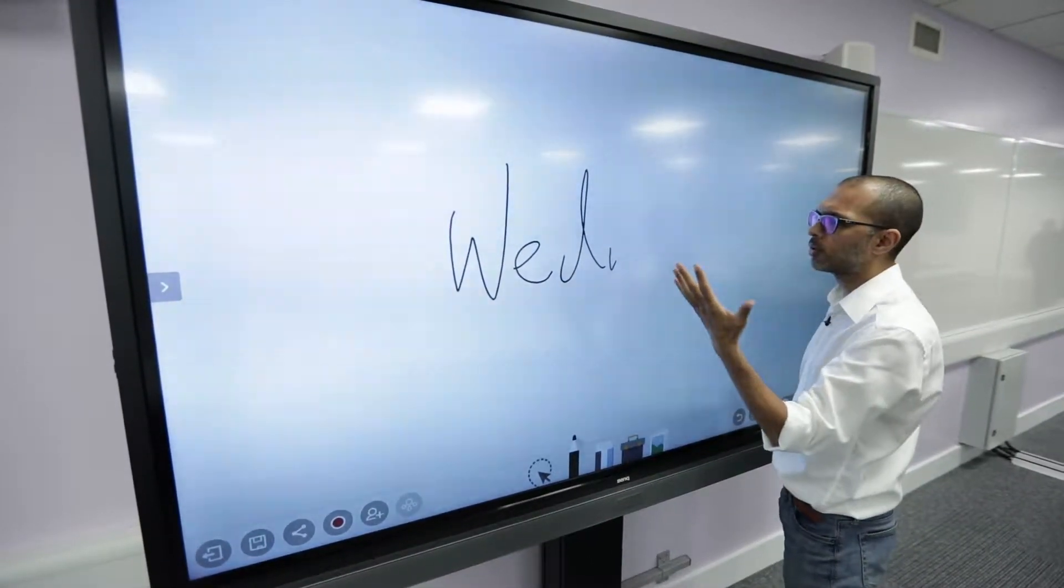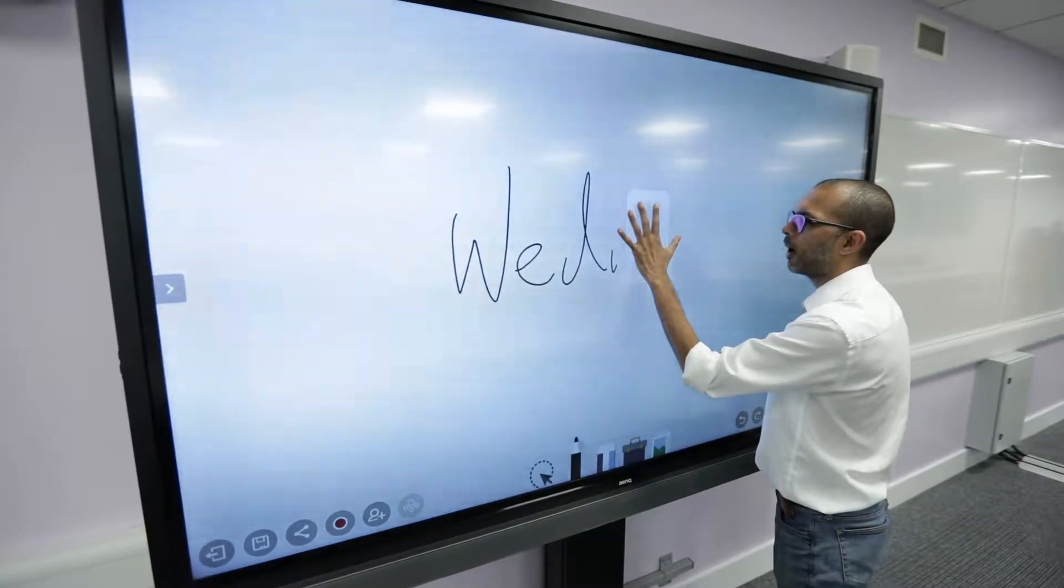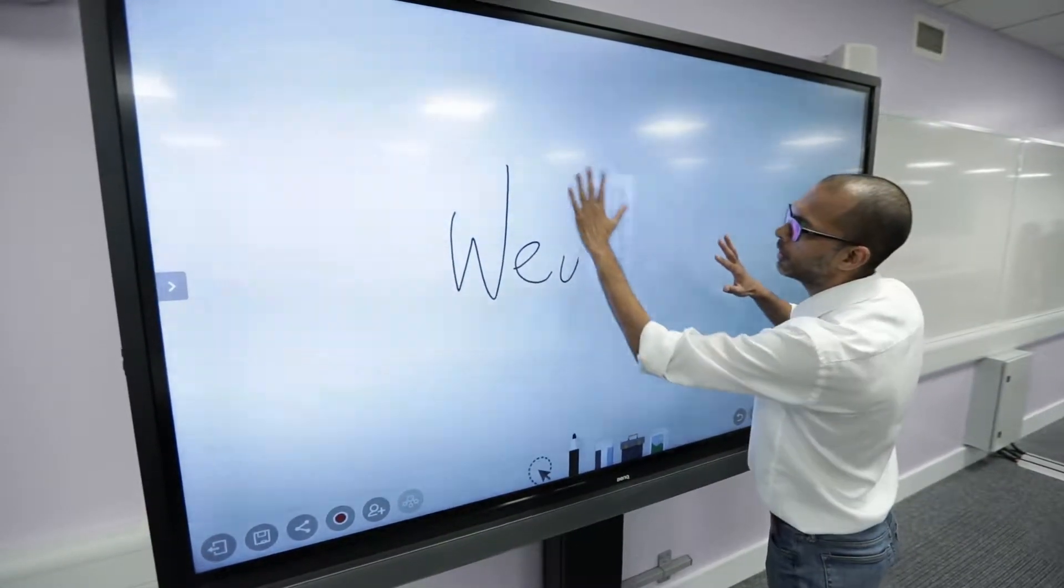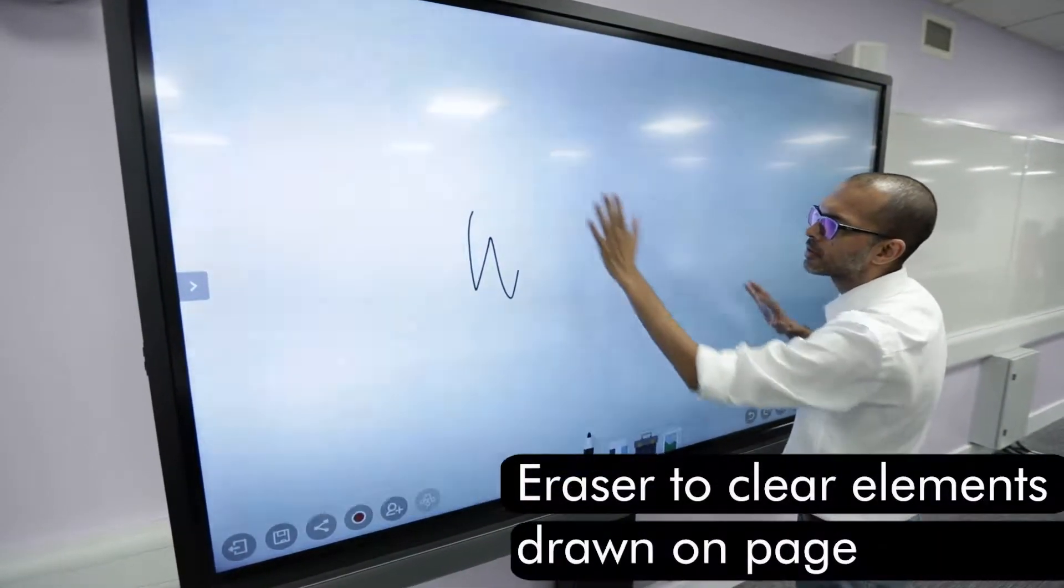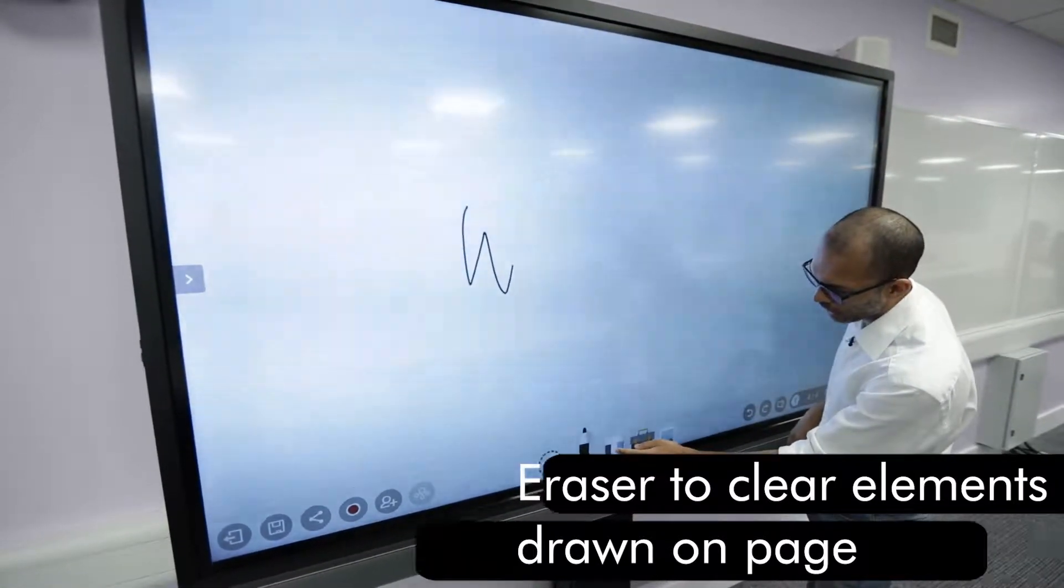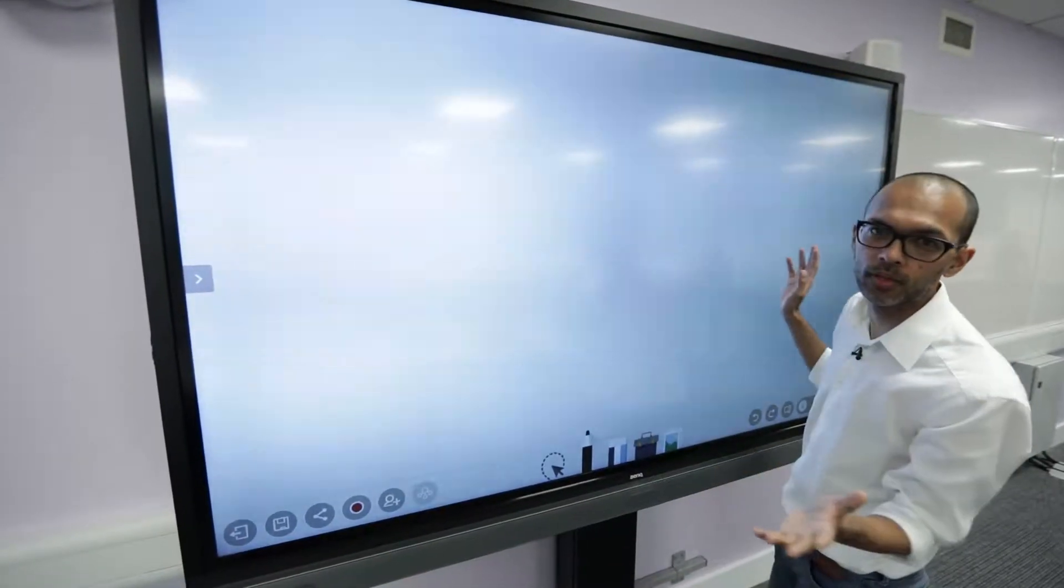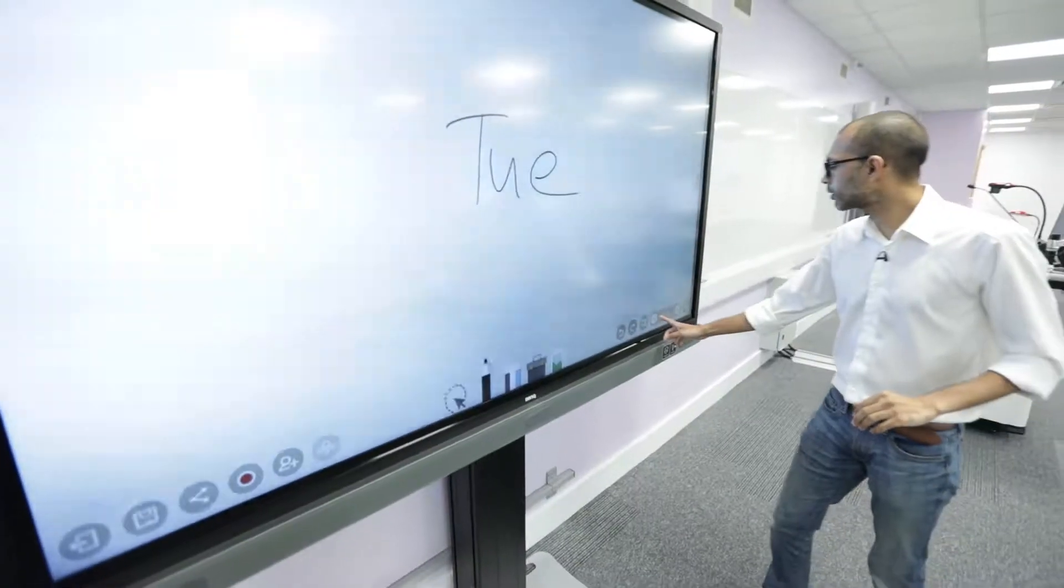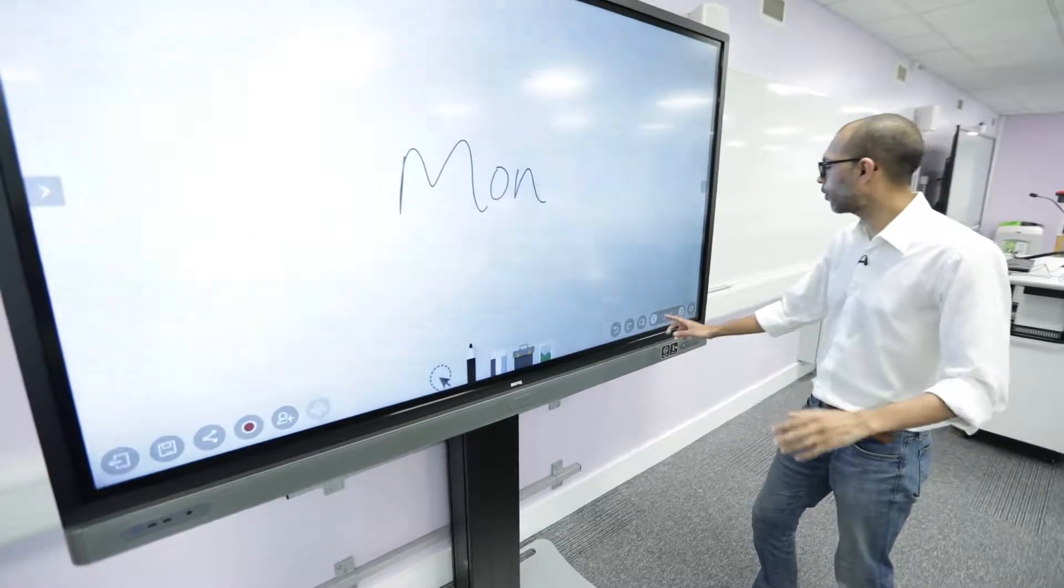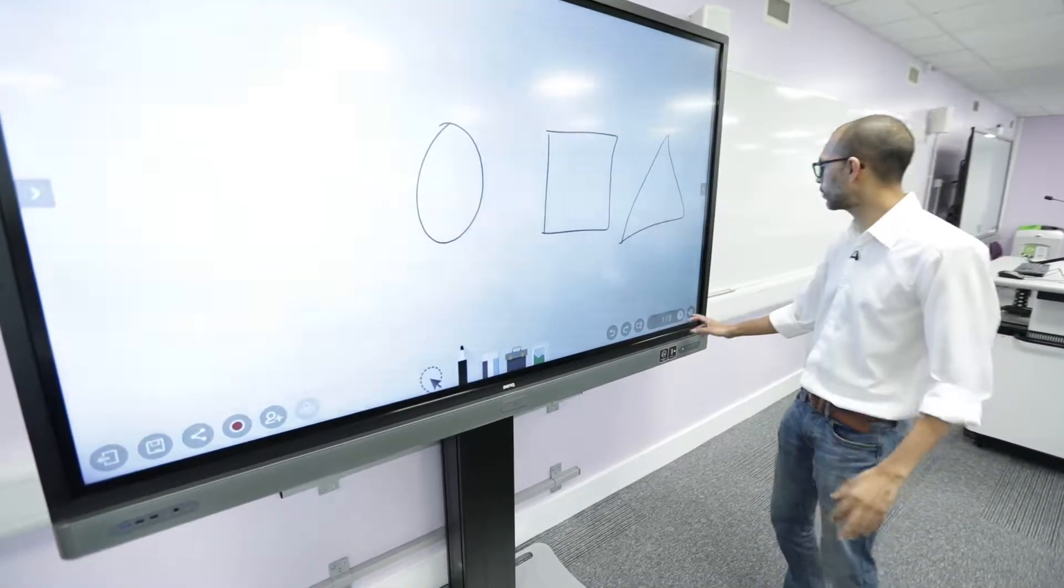I can also use my palm. That gives me a bigger eraser. If I want to erase everything, I can just select this and erase all, and that would clear everything on the screen. I can go back and forth between the different pages.